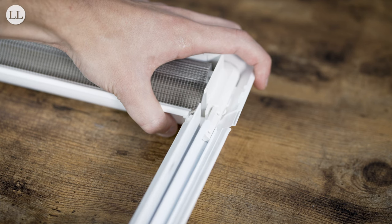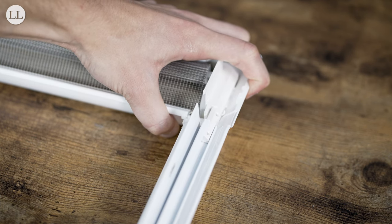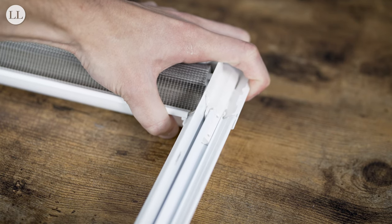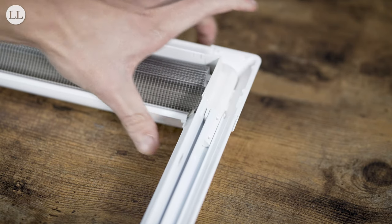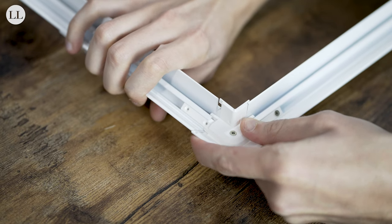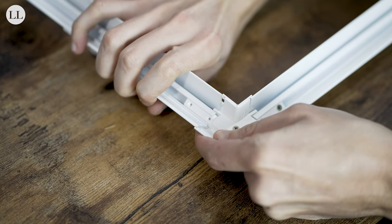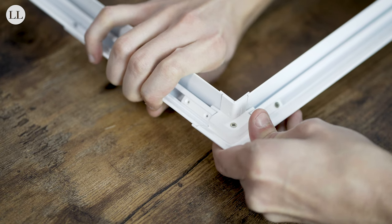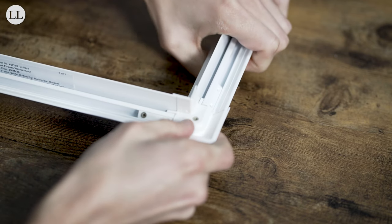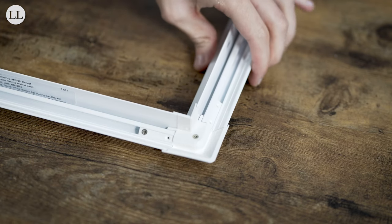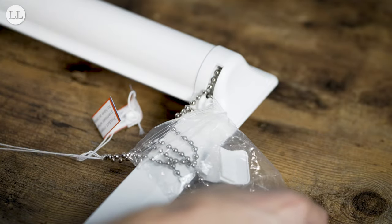Attach the blank side channel to the idle end side of the headrail. Then attach the bottom section to the two side channels. Release the chain and cord tidy components.